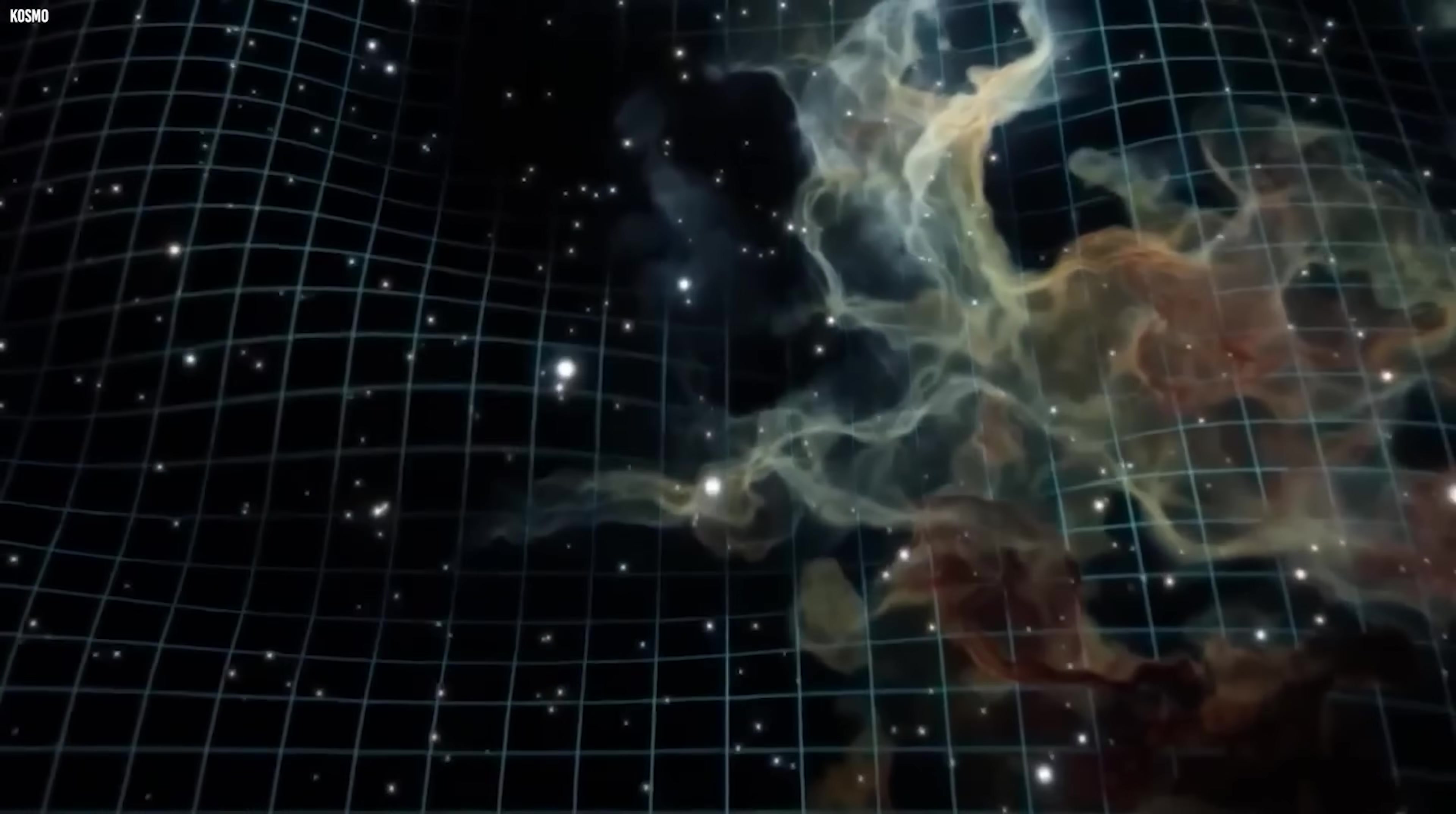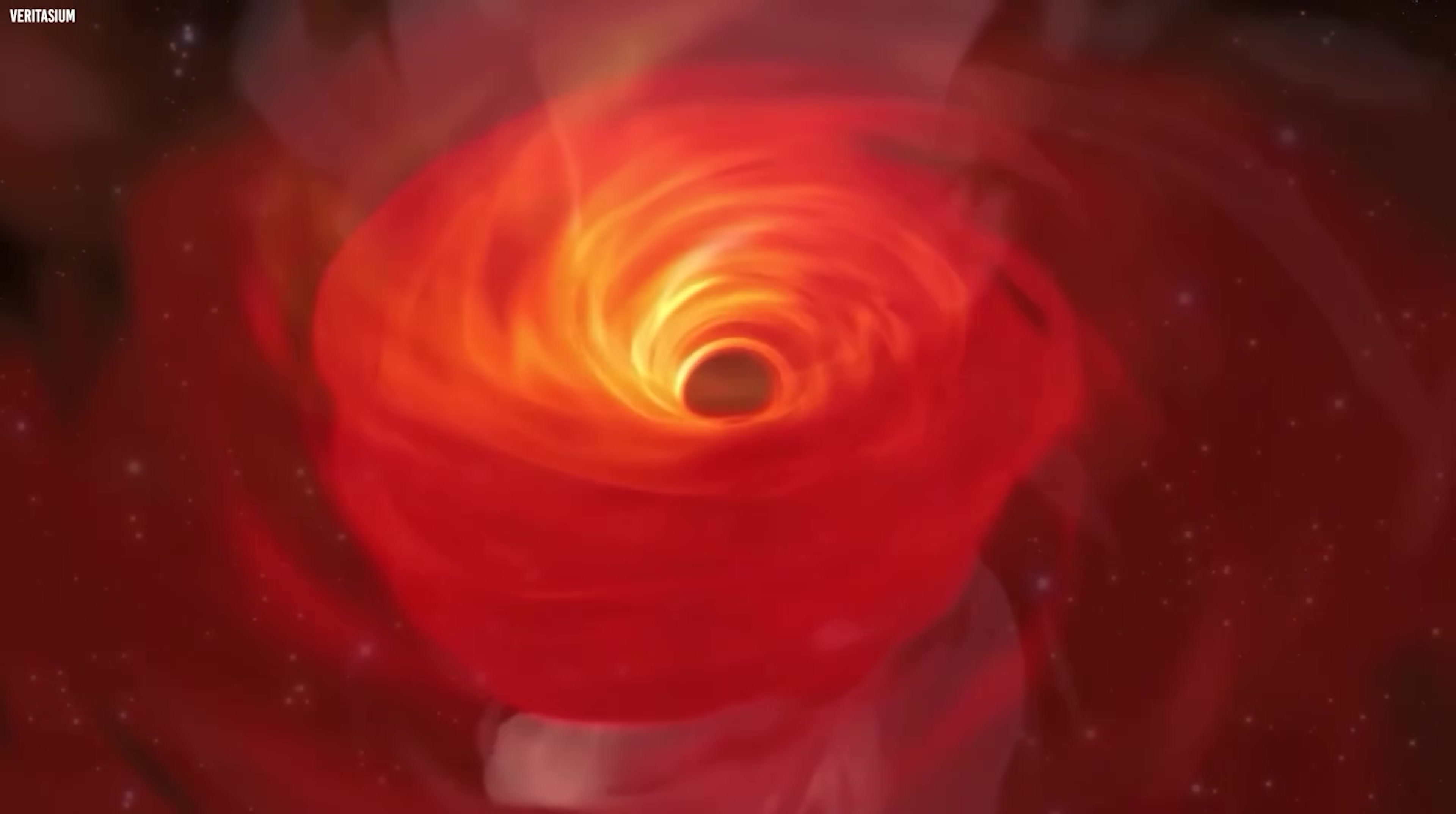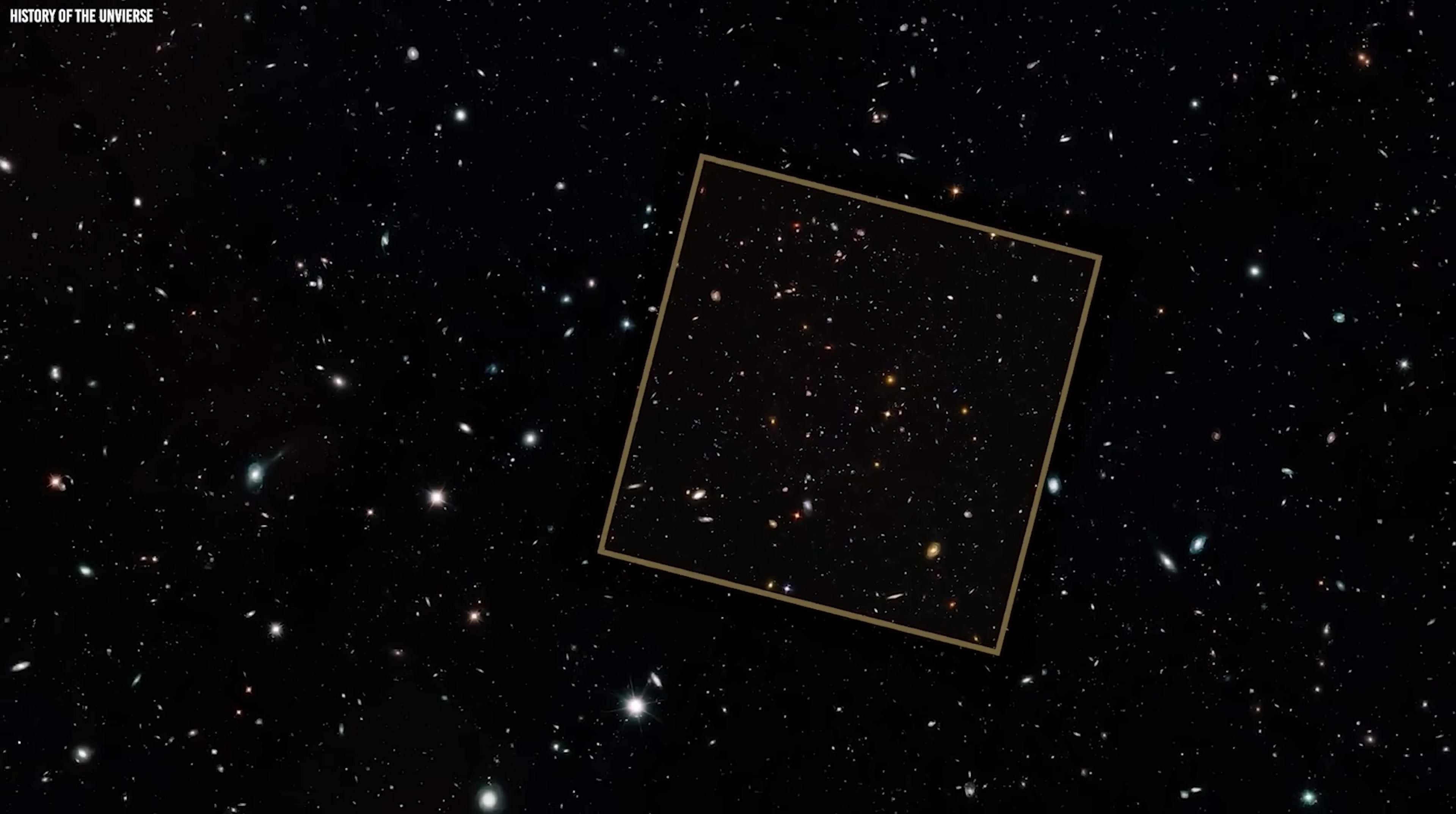In doing so, the work opens new doors in the quest for quantum gravity. It provides a realistic setting where quantum fields and curved spacetime meet not as abstractions, but as active partners shaping cosmic destiny. The study also points forward. It hints at richer, more complex realities waiting to be explored. Real neutron stars spin at incredible speeds, hide layered interiors, and generate magnetic fields so strong they strain imagination. White dwarfs come in many compositions and structures. Adding these ingredients will complicate the math, but it may also refine the story and reveal new subtleties in how matter fades.